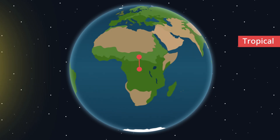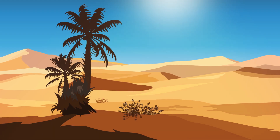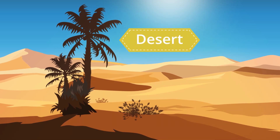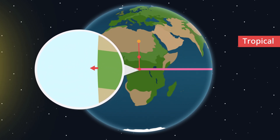Together, the rainforests and the savannah make up the tropical climate zone. Continuing further north, the sun is blazing, it is extremely hot, and almost nothing grows. How come it's so dry here? Remember that air rises from the equator when the sun shines and it gets hot — that air can't rise forever.